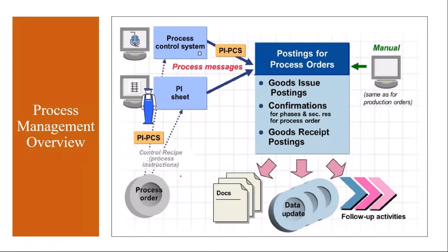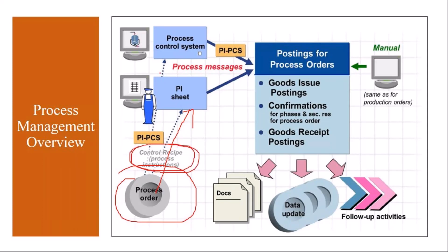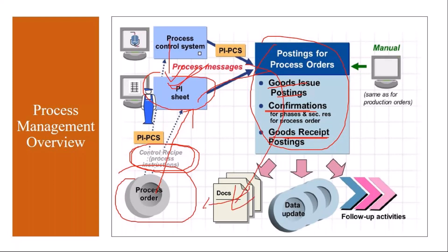So what we are doing is: we create a process order, and from the process order you send the information to the process control system using a control recipe. On the PA sheet, users enter the actual production data, and this comes and gets updated in the process order — goods issue postings from material consumption, process order confirmations, and goods receipt postings all get updated in the process order automatically.